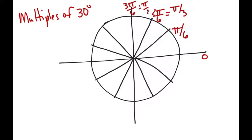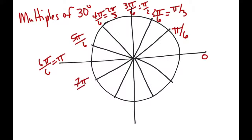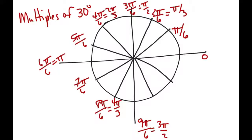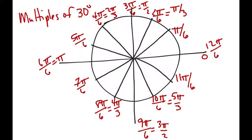The next one will be 3 pi over 6, which is pi over 2. Then 4 pi over 6, then 5 pi over 6 — which doesn't reduce — then 6 pi over 6, then 7 pi over 6, then 8 pi over 6, then 9 pi over 6, then 10 pi over 6, then 11 pi over 6. And then you're back at 12 pi over 6, which is 2 pi — the same thing as 360 degrees.